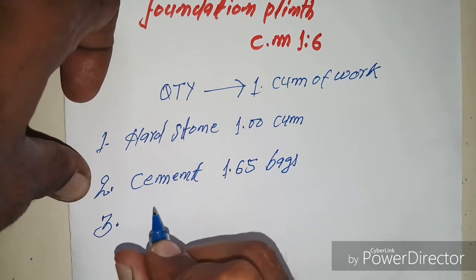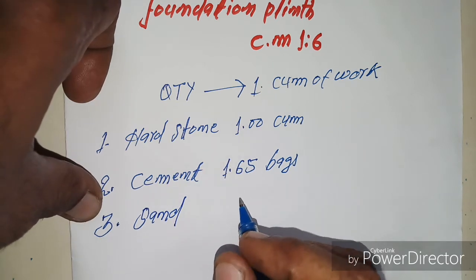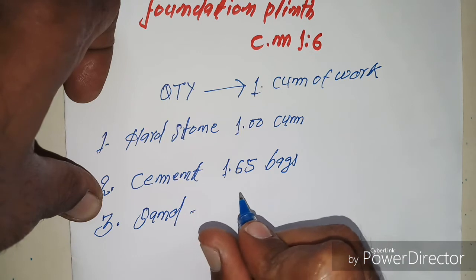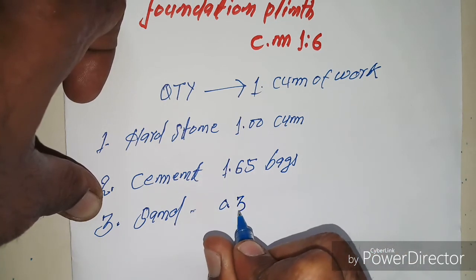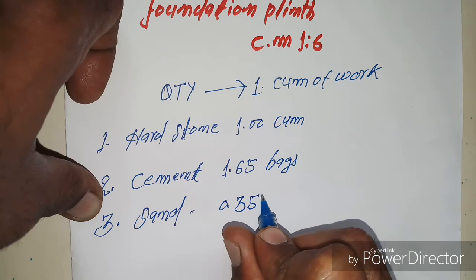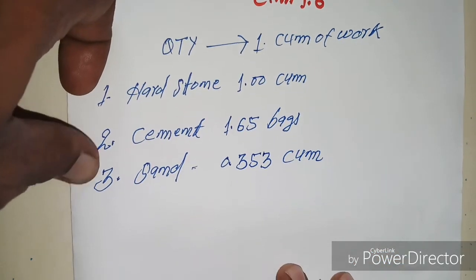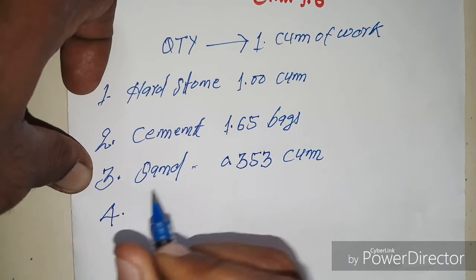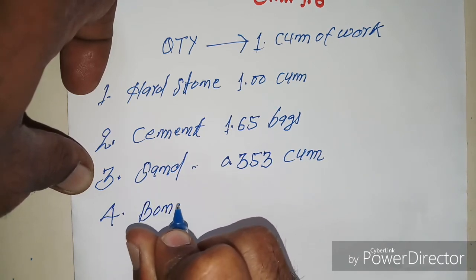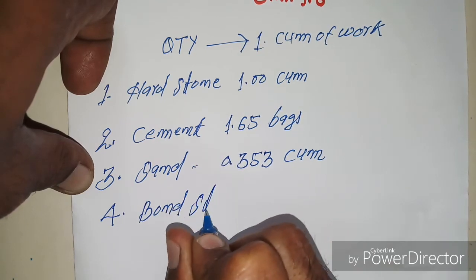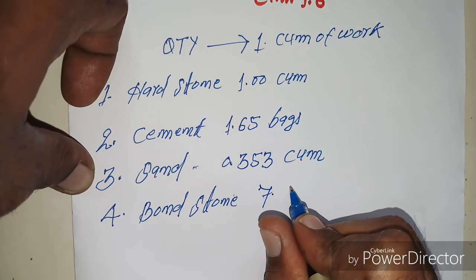Third number में — Sand: 0.353 cubic meter। Fourth number में — Bond Stone: 7 nos।